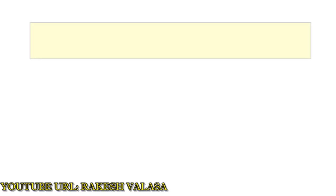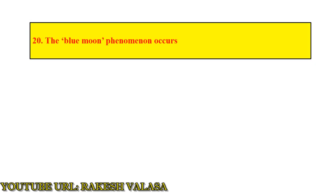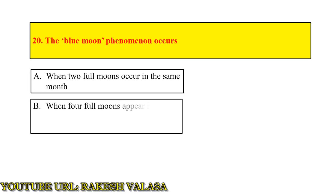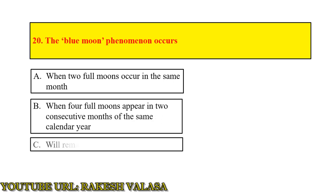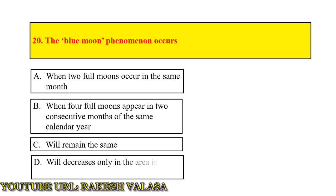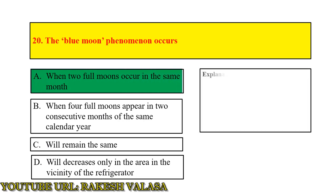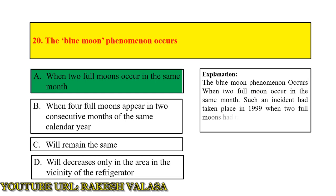Question number 20: the blue moon phenomenon occurs — answer: when two full moons occur in the same month. Explanation: the blue moon phenomenon occurs when two full moons occur in the same month. Such an incident took place in 1999, when two full moons occurred in both January and February of the same year.